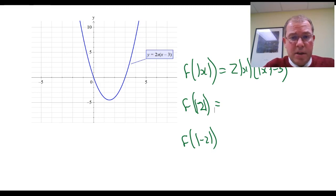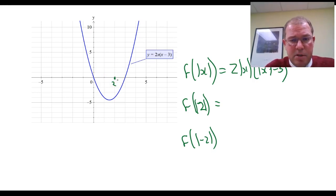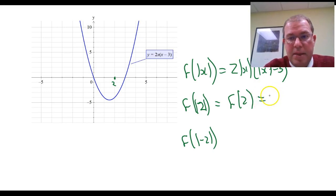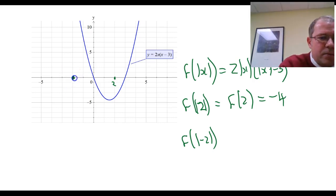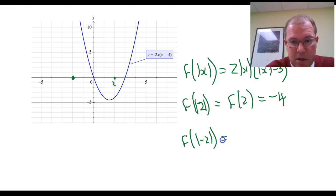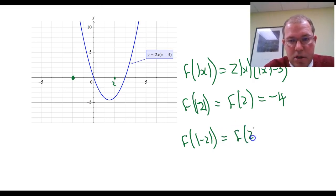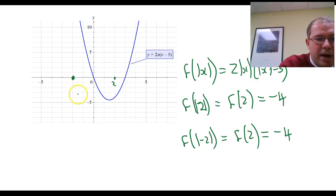f of absolute value of x is also another interesting transformation. Let's consider a point again — inputting x equals 2. The absolute value of 2 is still 2, so f of absolute value of 2 is just f of 2, which we know is negative 4. Interestingly, f of absolute value of x can output negative y values, which was different to our earlier transformation. Now let's look at x equals minus 2. If I input minus 2, the first thing it does is make it positive 2, because the absolute value of minus 2 is 2. So when I try to input a negative number, it first makes it positive and gives the same output as inputting positive 2, which is minus 4. So inputting minus 2 gives the same output of minus 4.